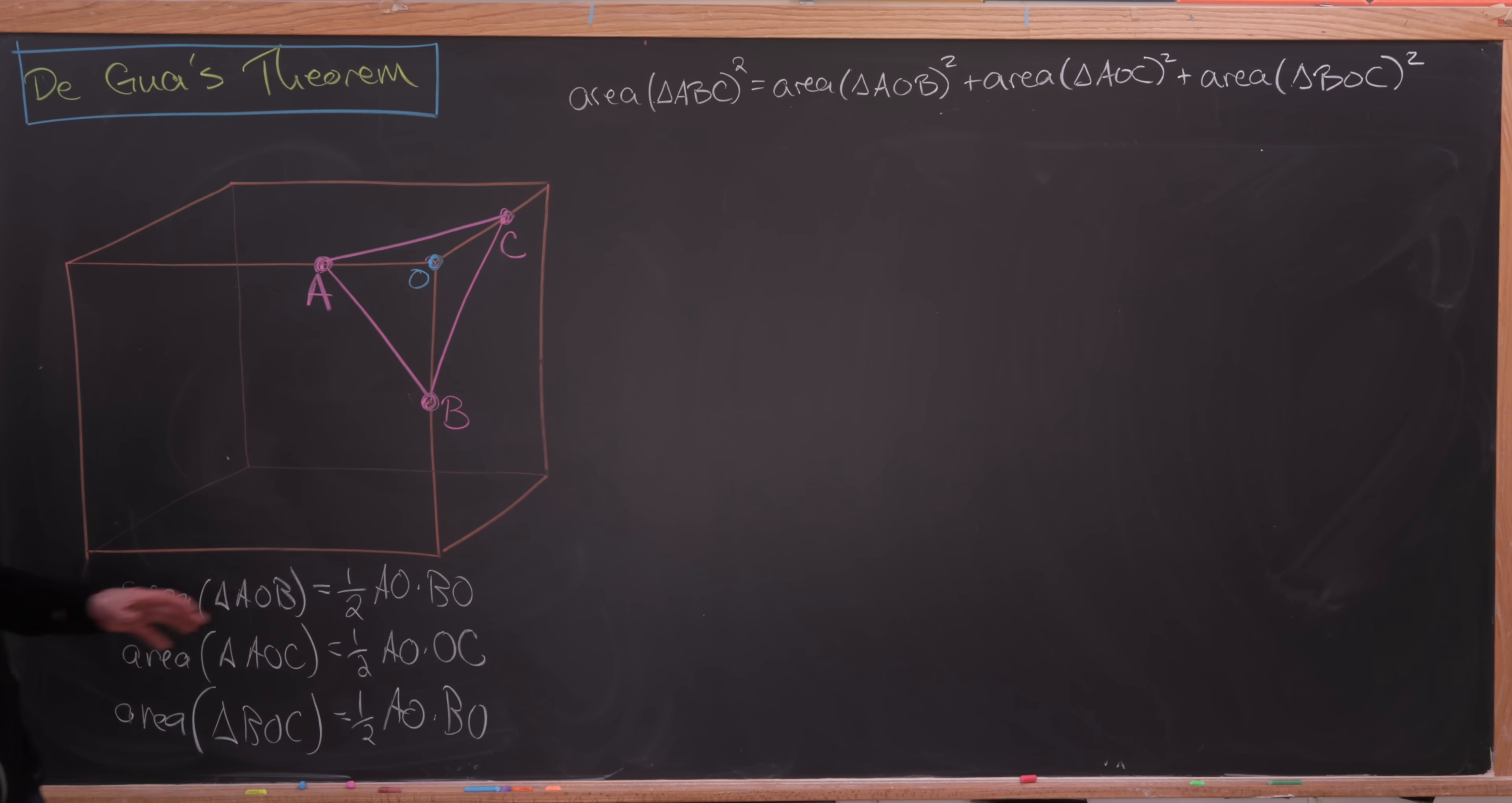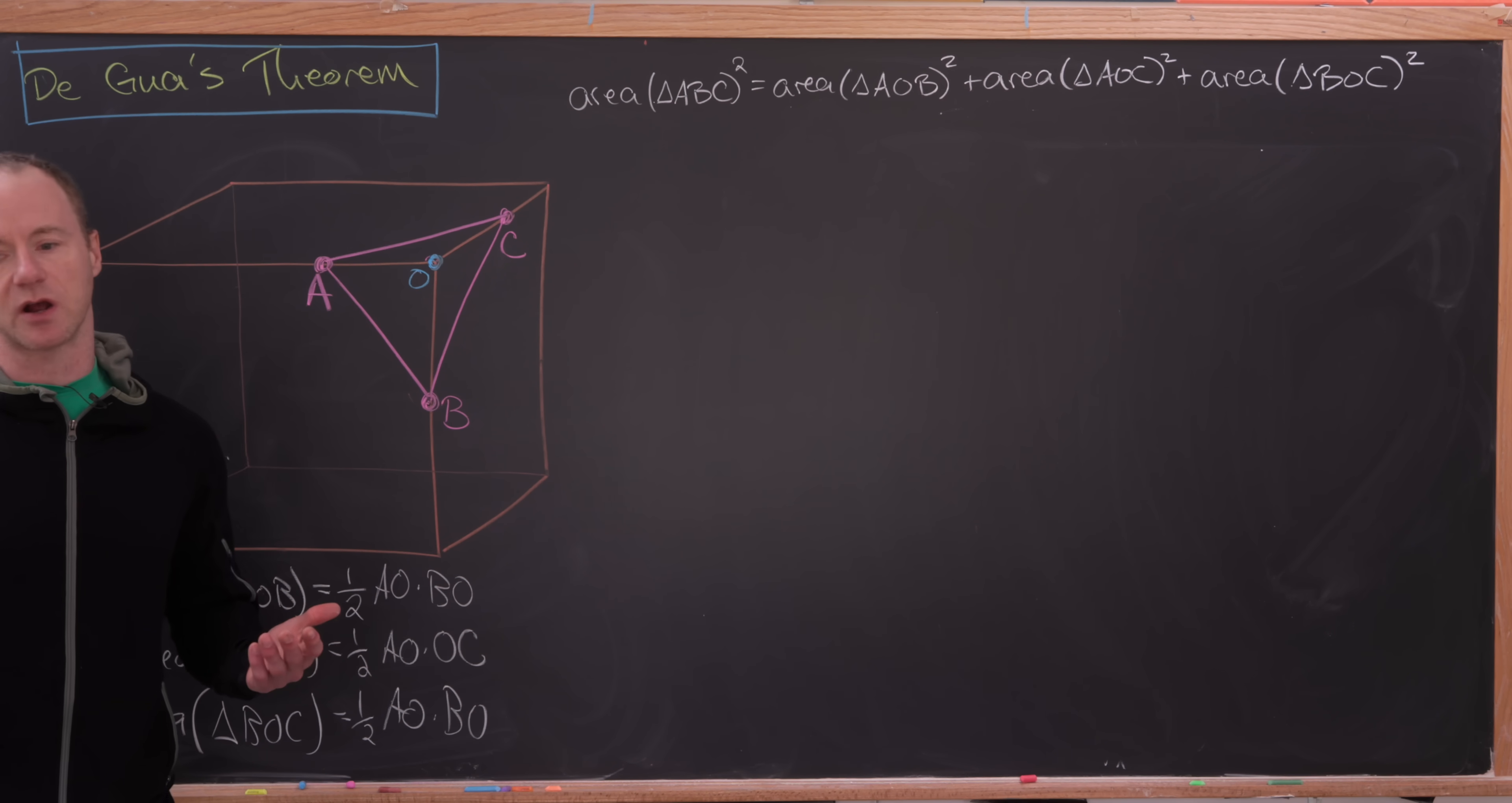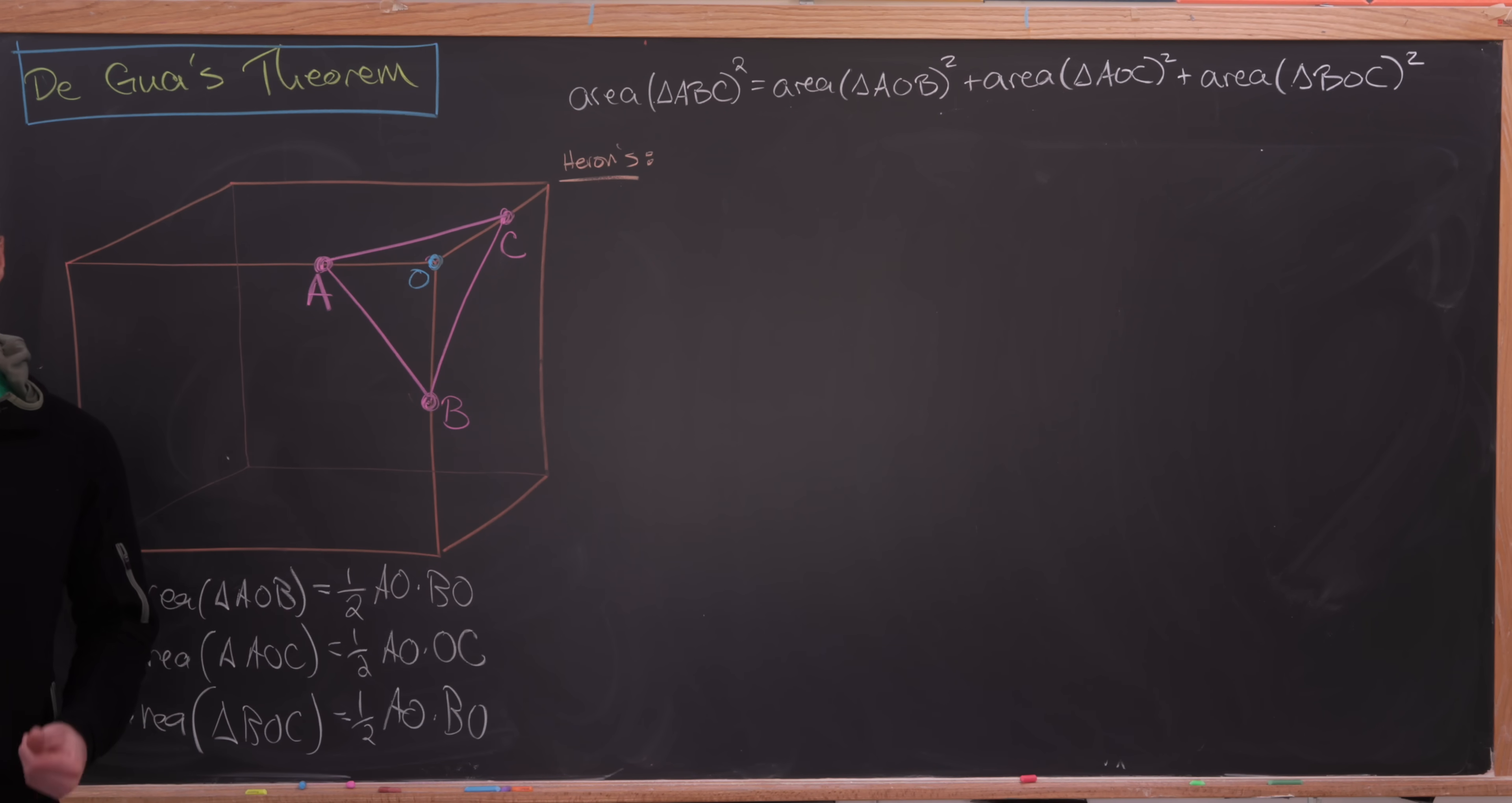But that takes care of the right-hand side of this proposed equation. Now we need the left-hand side, which is a bit trickier because we don't have a right triangle anymore. So we'll have to use a pretty famous formula for calculating the area of a triangle based off the side length, and that's Heron's formula.